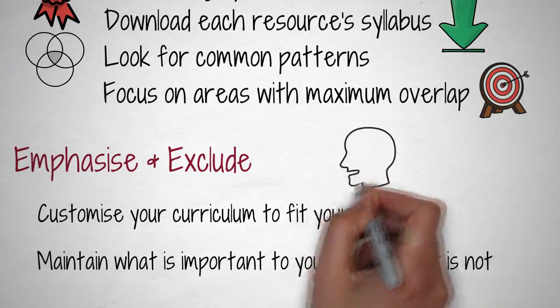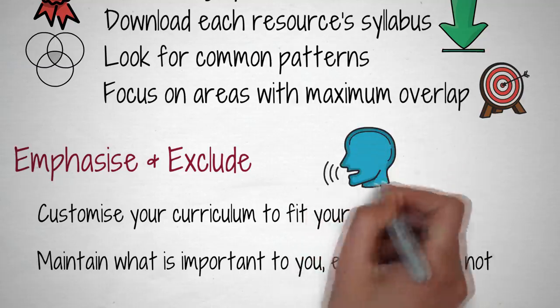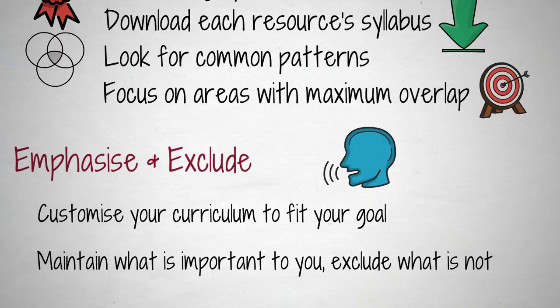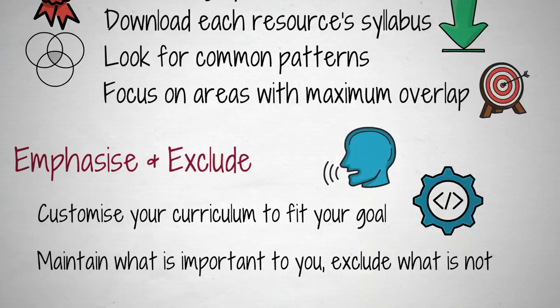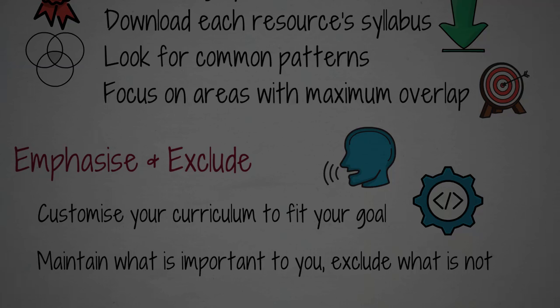Here are two examples. If you want to speak Italian during a trip to Florence, emphasize learning to pronounce and exclude learning how to spell. If you want to build apps quickly, focus on app development rather than theories of computer science.